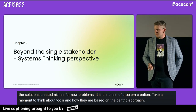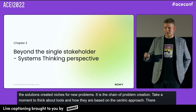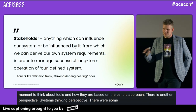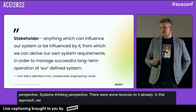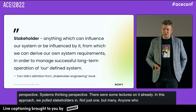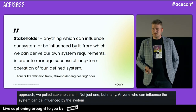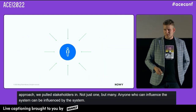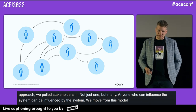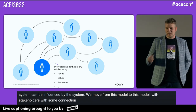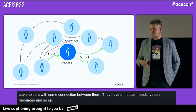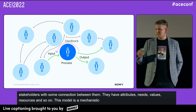There's another perspective: systems thinking. In this approach, we put stakeholders into the game — not only one stakeholder, but many. Stakeholders can be anything or anyone who can influence the system and be influenced by it. That's Tom Gilb's definition — Tom did great work on stakeholder engineering. We move from the simple model to one that looks more like a network: stakeholders with connections and interactions between them, having attributes like needs, values, and resources.